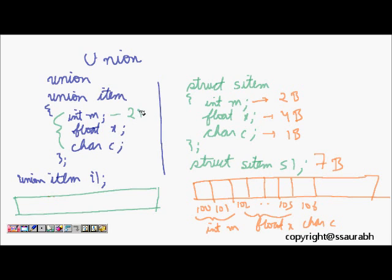The highest - this is 2 byte integer, this is 4 byte, and this is 1 byte. Now it allocates the maximum of the memory. It's 110, 111, 112, 113. It allocates the maximum memory that is required by one of the elements.